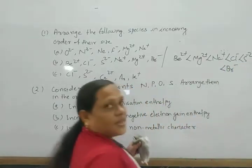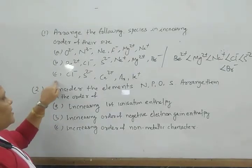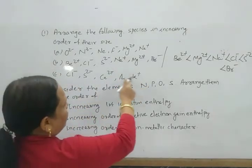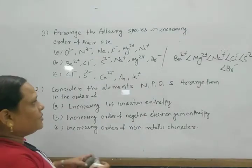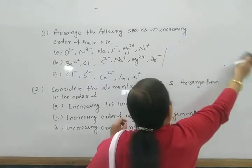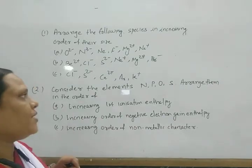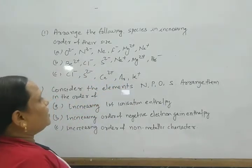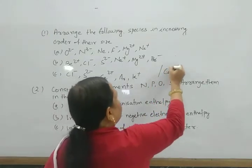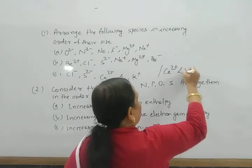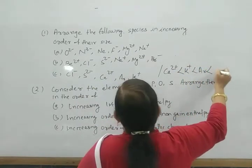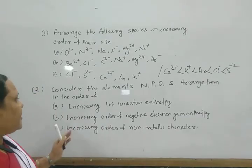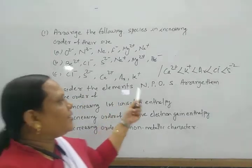Part C: Cl⁻, S²⁻, Ca²⁺, Ar, K⁺. All are isoelectronic with 18 electrons. The increasing order of size is: Ca²⁺ < K⁺ < Ar < Cl⁻ < S²⁻.